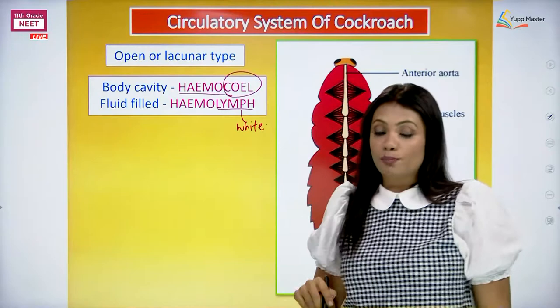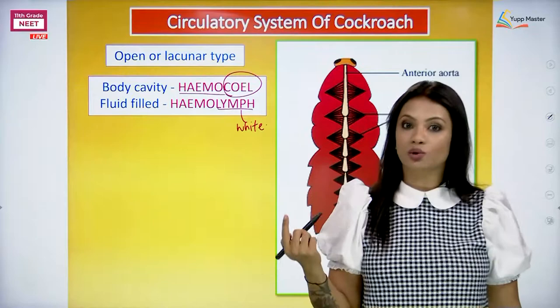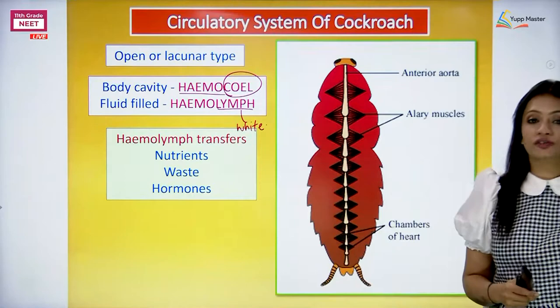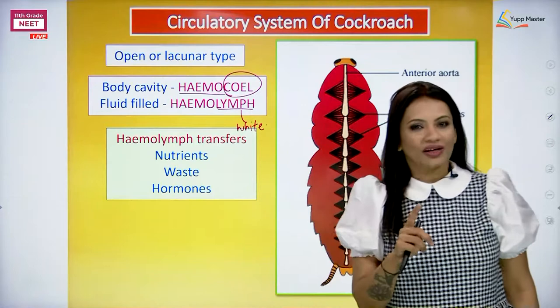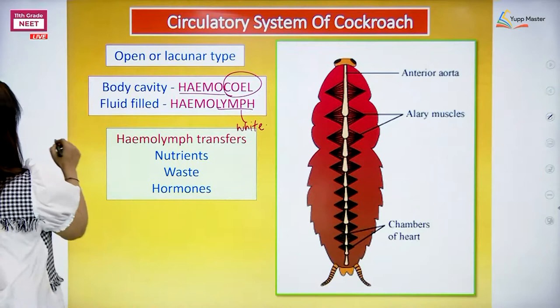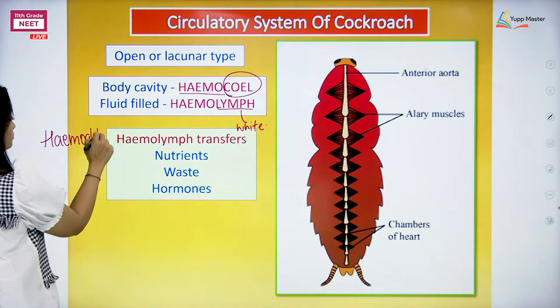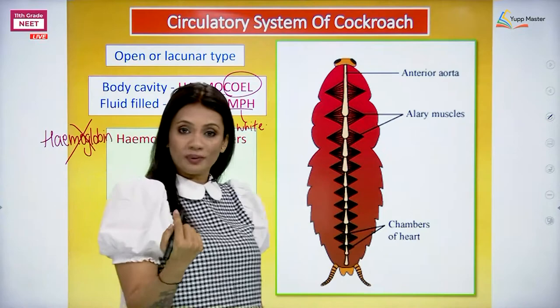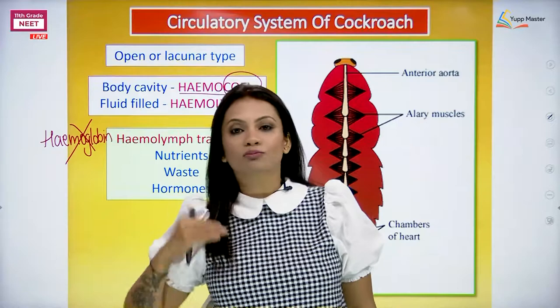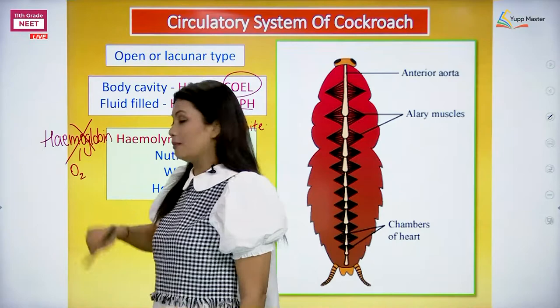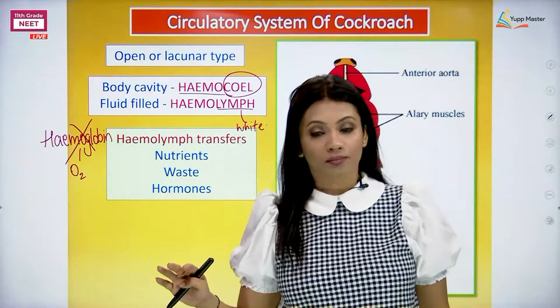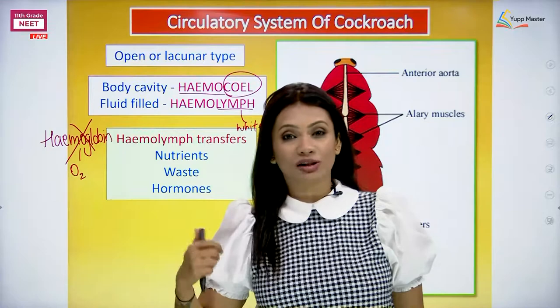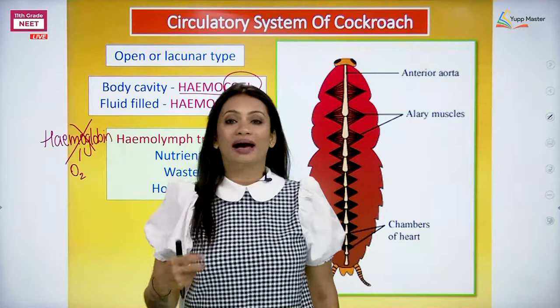Body cavity is called hemocoel whereas the circulating fluid inside it is going to be called hemolymph. Hemolymph does the work of transferring. There is no pigment - the pigment called hemoglobin is not present. Hemoglobin in our body is not only giving color to the blood; it is doing the much more important work of carrying oxygen. But cockroaches don't have hemoglobin at all, so the blood of the cockroach is going to have absolutely no role in exchange of gases.